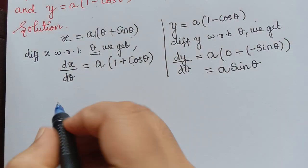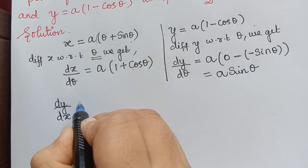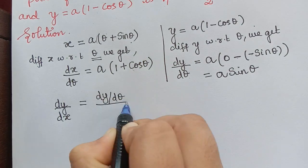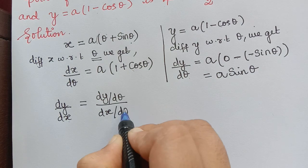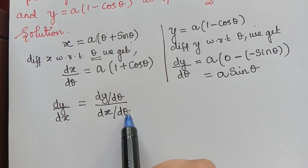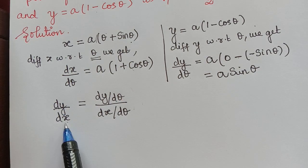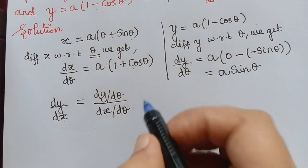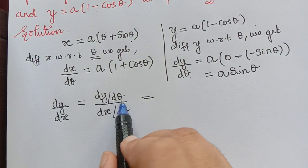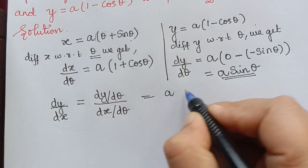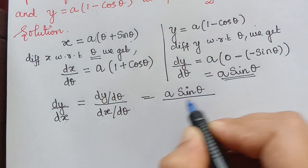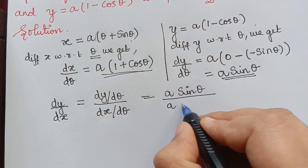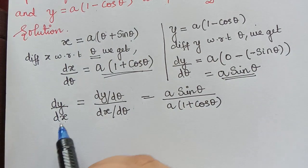Now we find dy/dx. Since the curve is in parametric form, dy/dx equals (dy/dθ) divided by (dx/dθ). Substituting: dy/dθ = a·sin θ and dx/dθ = a(1 + cos θ). So dy/dx = a·sin θ divided by a(1 + cos θ).